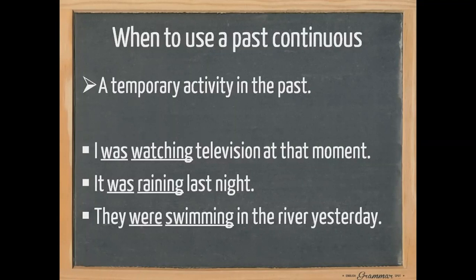Now let's get started. Take a look at these sentences. When to use past continuous? A temporary activity in the past. For example, I was watching television at that moment. Now at that moment, which is a specific moment, I was watching TV. Then I stopped. I didn't watch it forever. It was a temporary activity.